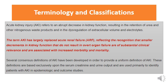Starting with terminology: what is the difference between acute renal failure and acute kidney injury? Acute kidney injury refers to an abrupt decrease in kidney function resulting in retention of urea and other nitrogenous waste products, and dysregulation of extracellular volume and electrolytes. This term replaces the old term acute renal failure because smaller decrements in kidney function that don't result in overt organ failure are of substantial clinical relevance and are associated with increased morbidity and mortality. Several consensus definitions of AKI have been developed based exclusively on serum creatinine and urine output.